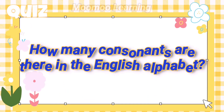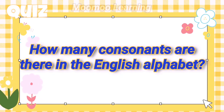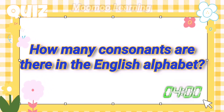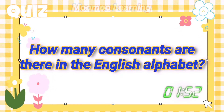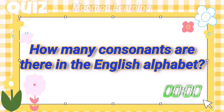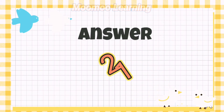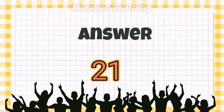How many consonants are there in the English alphabet? Answer: 21 consonants.